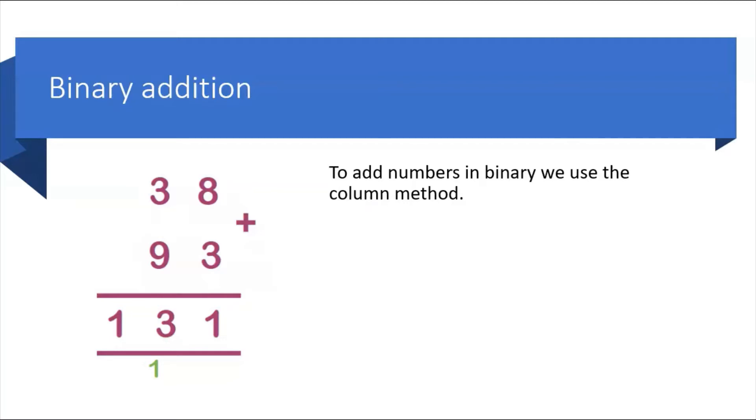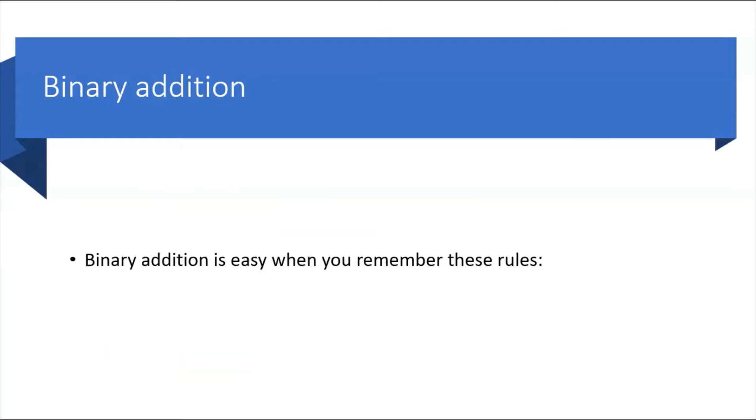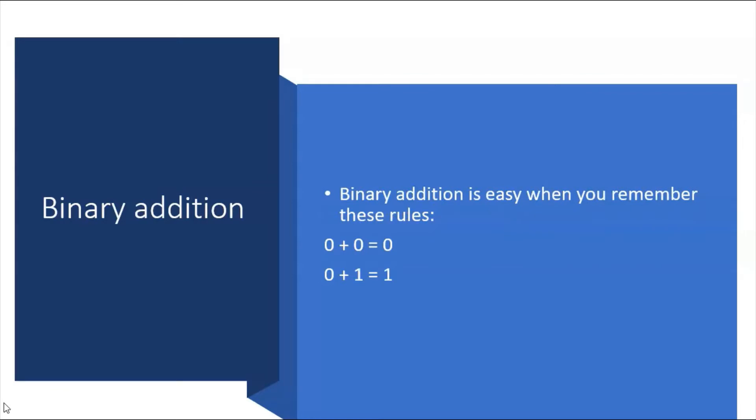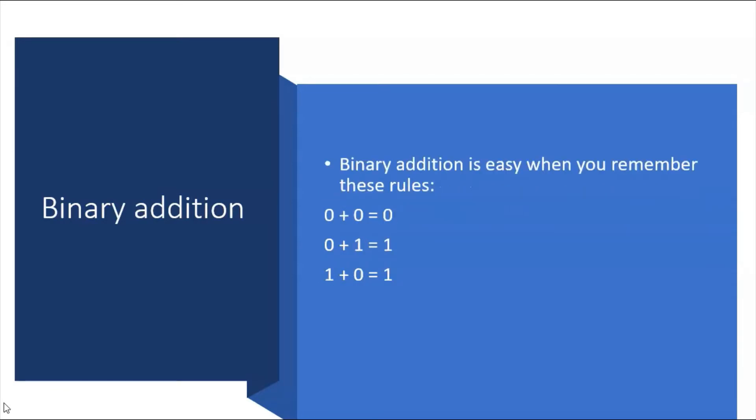I'm going to use the column method to add my ones and zeros, so I need to remember these following rules to be able to do that: zero plus zero is zero, so nothing and nothing is always going to be nothing. Zero plus one is one, one plus zero is one.